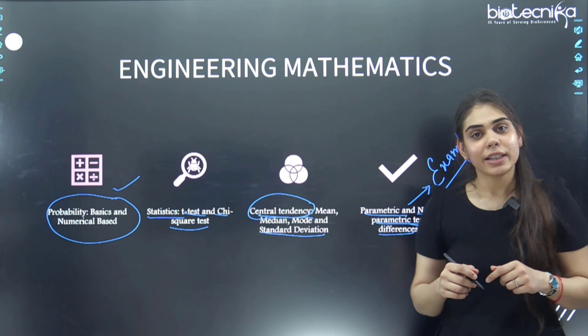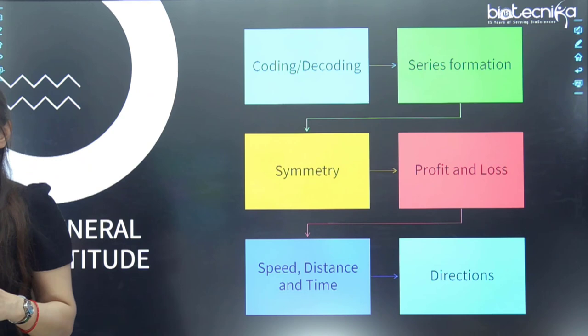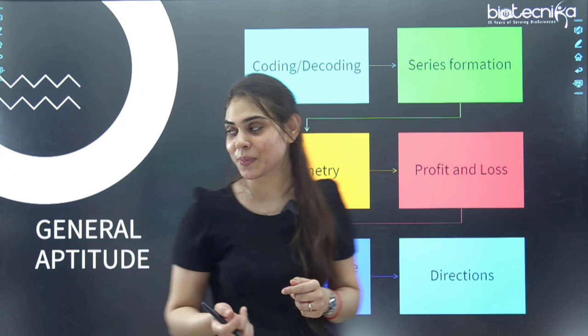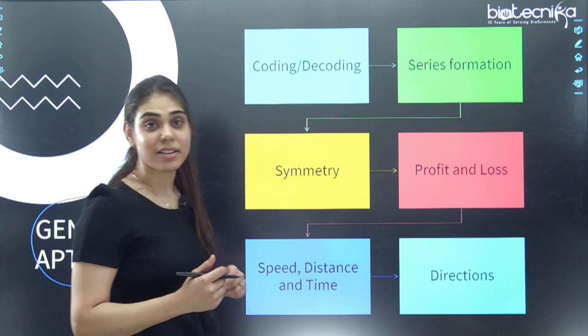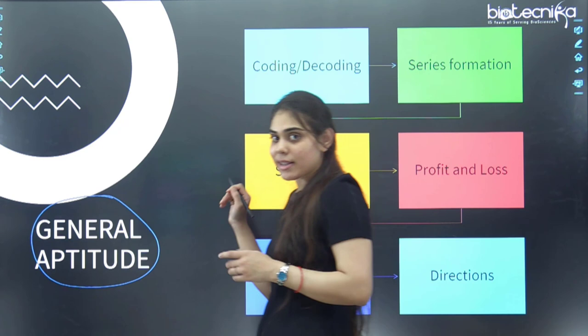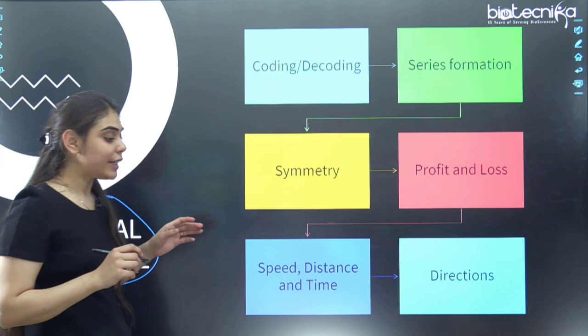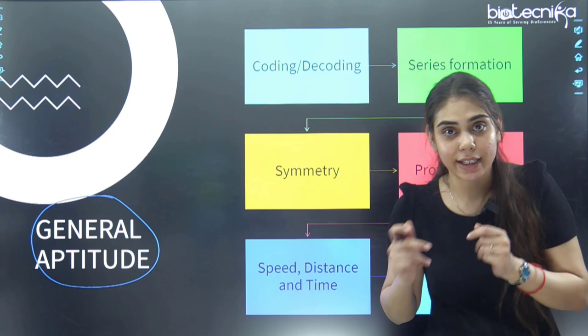The last and biggest scoring topic for every exam is general aptitude, which is common for CSIR, DBT, GATE Biotechnology, and GATE Life Sciences. Practice PYQs for general aptitude — past 10 years for GATE Biotechnology, then GATE Life Sciences, then DBT, then CSIR, going hierarchy-wise. Topics include coding and decoding, series formation, profit and loss, symmetry, speed-distance-time, and directions.